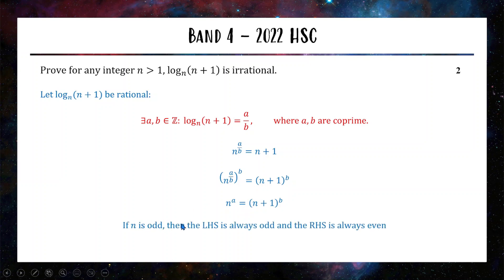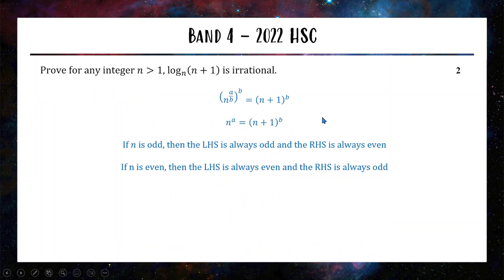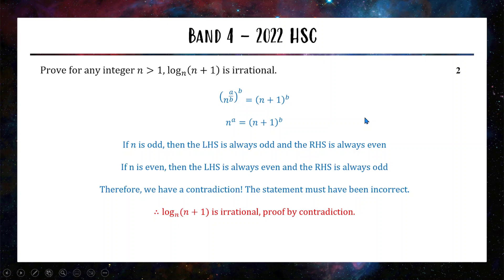This is our argument for saying this equality doesn't make sense — this equation doesn't work, therefore the statement that log base n of (n+1) is rational is incorrect. By contradiction, our original statement was incorrect, and log base n of (n+1) is therefore irrational. It's really important that you know how to set up your contradiction proofs and then work out how to make them not make sense, thus proving the original statement.